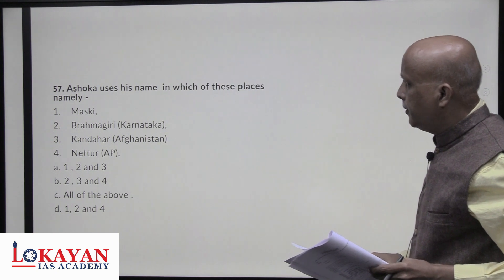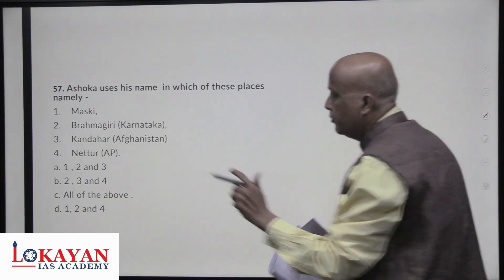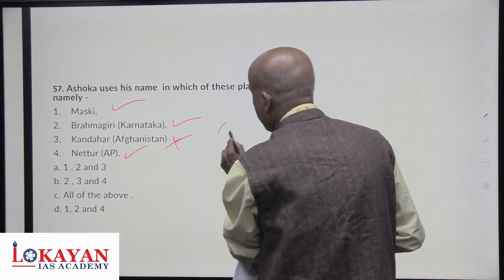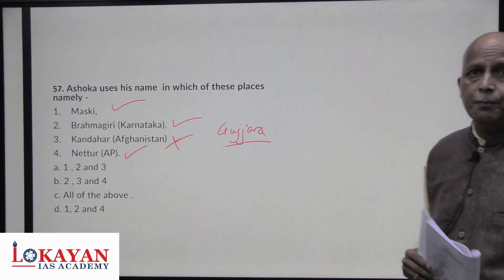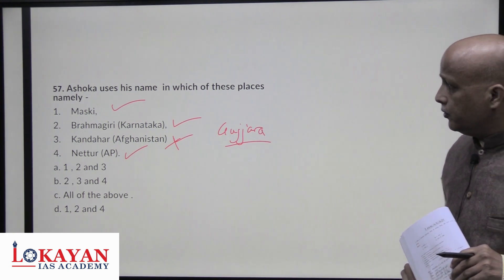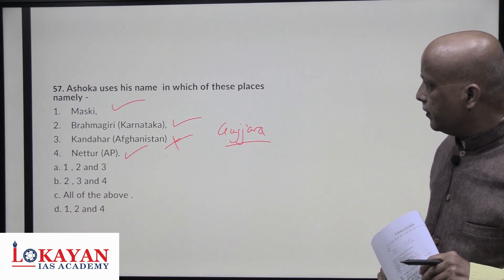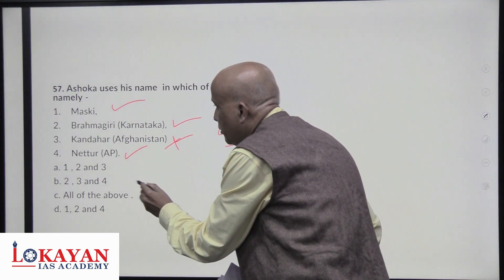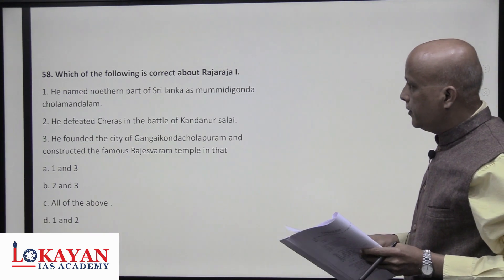Ashoka uses his name in which of these places: Maski, Brahmagiri, Nittoor, and Gujarra. In these inscriptions, the word 'Raja Ashoka' is used, which is how we know that the 'Beloved of the Gods' refers to Ashoka himself. Kandahar is not in this list, so it is not correct. Statements one, two, and four are correct — answer is D.